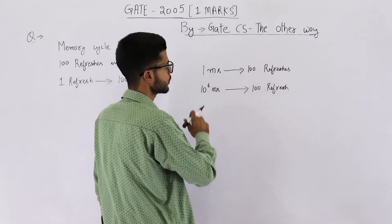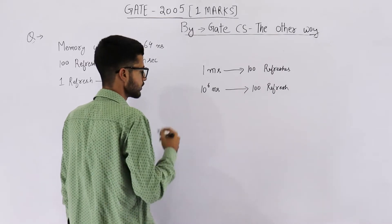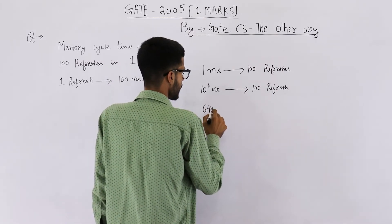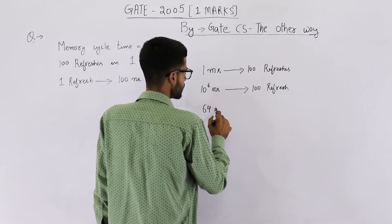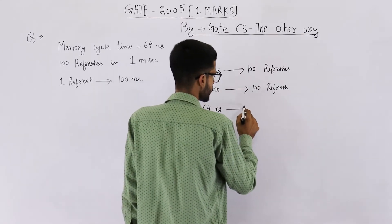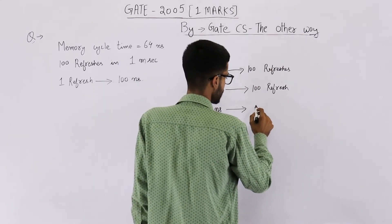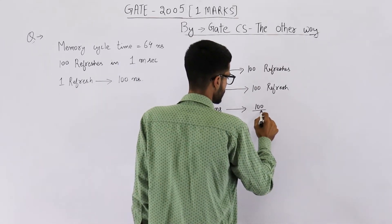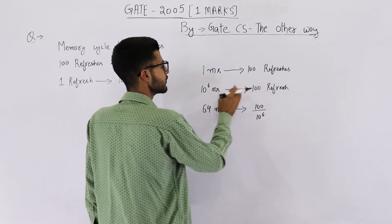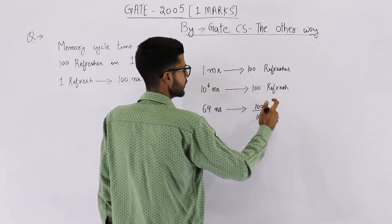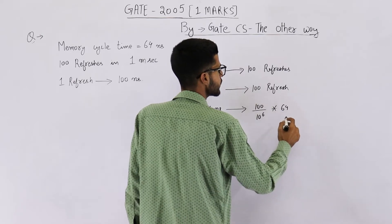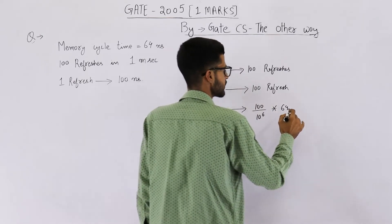That means in 10 raised to the power 6 nanoseconds it needs to be refreshed 100 times, because one millisecond is equal to 10 raised to the power 6 nanoseconds. From here you can find out how many times we need to refresh it in 64 nanoseconds — that will be 100 upon 10 raised to the power 6, divided into 64. These many refreshes.